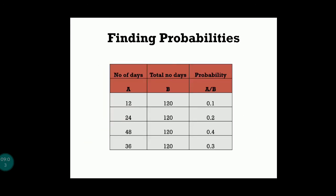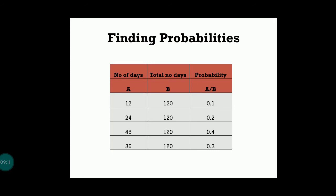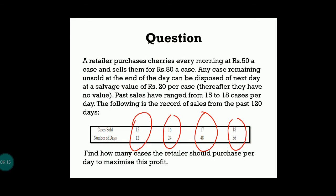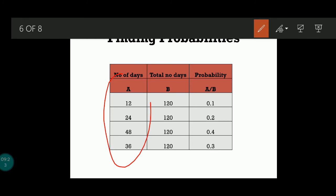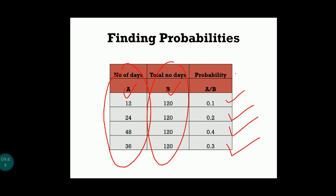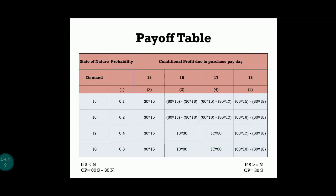Now we calculate probabilities from the 120-day record. The number of days were 12, 24, 48, and 36 for demands of 15, 16, 17, and 18 respectively. Dividing each by 120: probability of demand 15 = 12/120 = 0.1; demand 16 = 24/120 = 0.2; demand 17 = 48/120 = 0.4; demand 18 = 36/120 = 0.3.